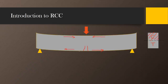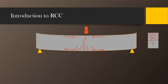What happens is that as the load increases, the concrete starts cracking from the soffit — that is, the bottom portion of the beam. If the load continues to increase, these cracks propagate upward, and as a crack reaches the top, rupture of the beam will take place. So due to the lack of tensile stress-carrying capacity, the total section will fail.